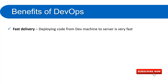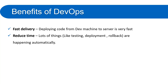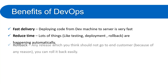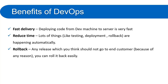Let's look at the benefits of DevOps. First, fast delivery — deploying code from a dev machine to the server is very fast. The developer commits and pushes to the repository, and the entire deployment process is automatic. Second, reduced time — things like testing, deployment, and rollback happen automatically. Once the initial setup is done, everything happens automatically and you only need to focus on your development. Third, rollback — any release can be easily rolled back if it contains a feature you don't want exposed to customers or if a wrong feature was deployed to the server.